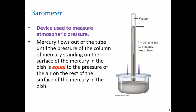The barometer is the device used to measure atmospheric pressure. In a typical barometer, mercury sits in a container and atmospheric pressure presses down, sending mercury up a tube into a vacuum. At standard pressure, that's 760 millimeters of mercury — standard pressure at sea level. That's where that measurement comes from.